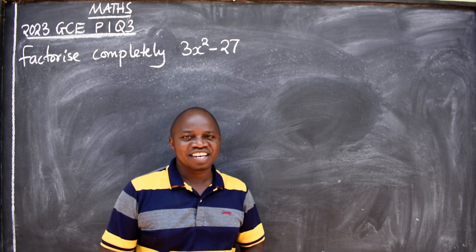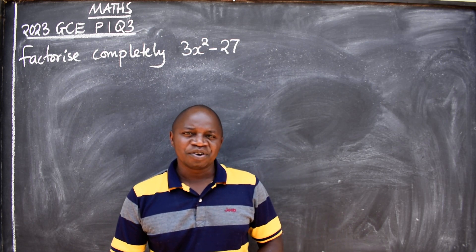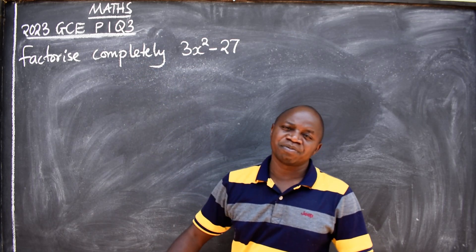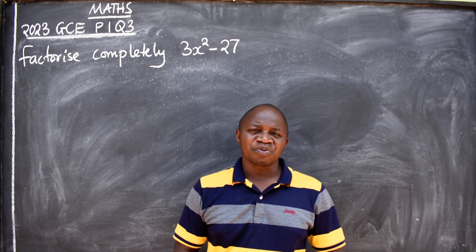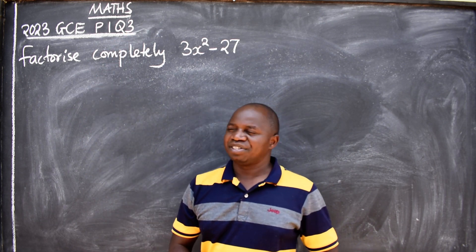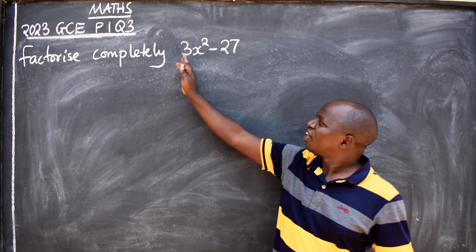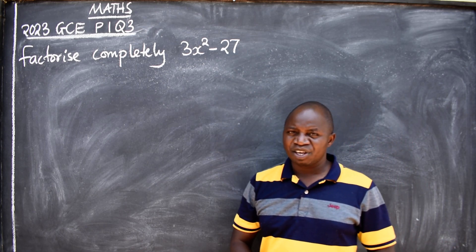Hello dear friends, this is mathematics. In this video we want to look at this question coming from 2023 GCE paper 1, question number 3. The question reads: factorize completely 3x² - 27. You're factorizing, coming from the topic of algebra.